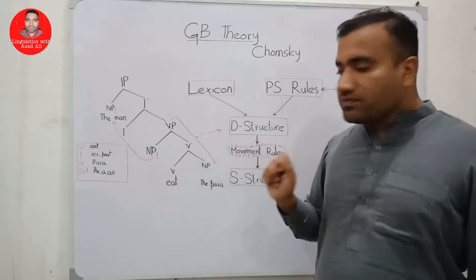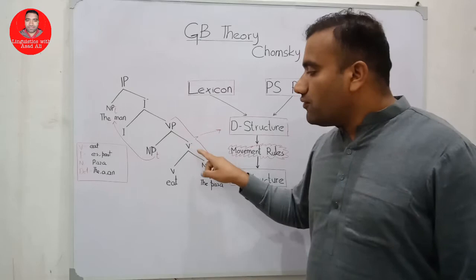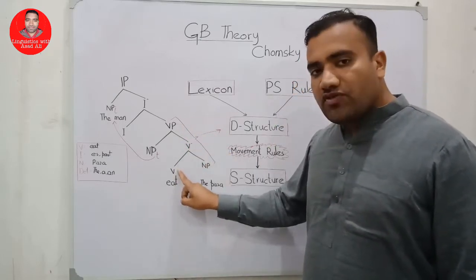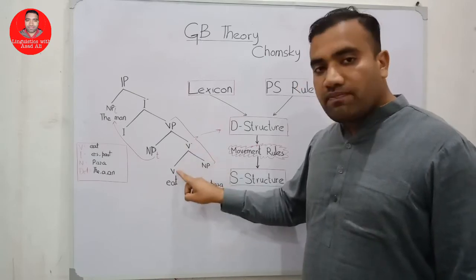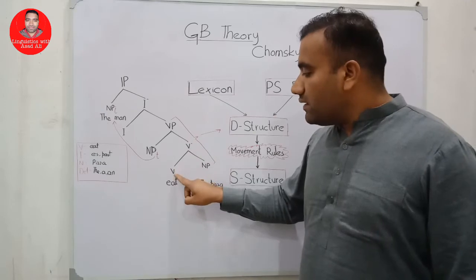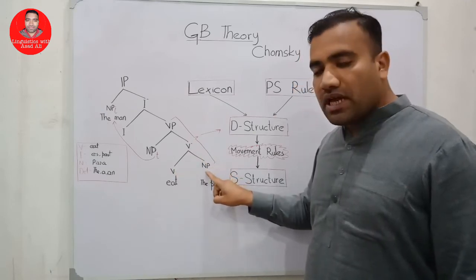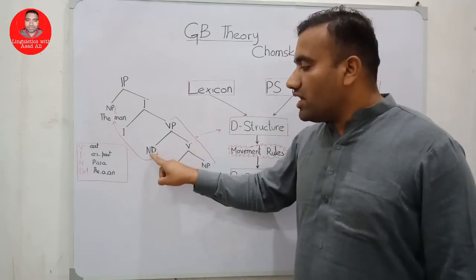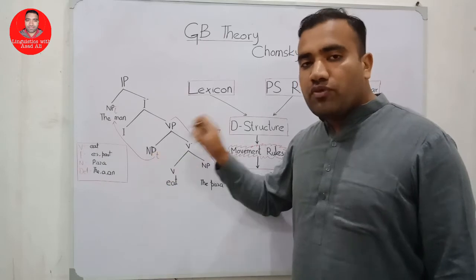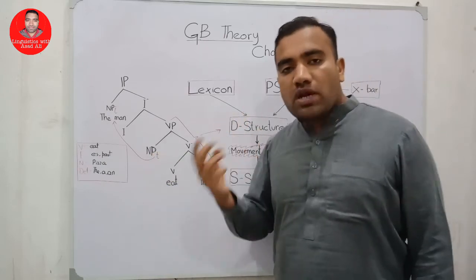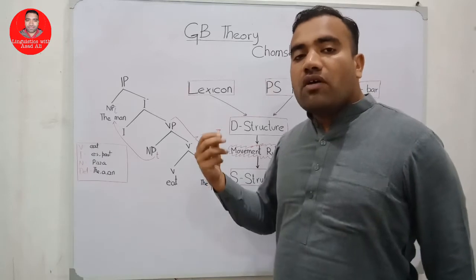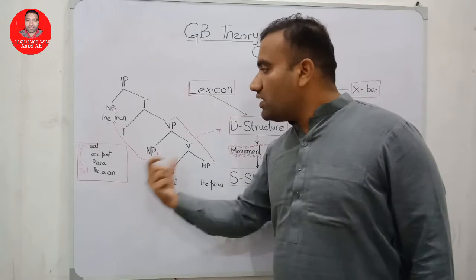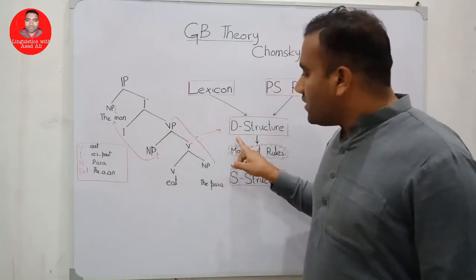We have two NPs and our structure will be the VP. This is our D-structure, and this diagram fulfills the X-bar rules. Here V is the head; it constructs V-bar, and V takes NP as a complement. After that it spreads and takes NP as a specifier position, because the requirement of this verb is that it takes two NPs. Here we have one NP and one NP — this is our D-structure.